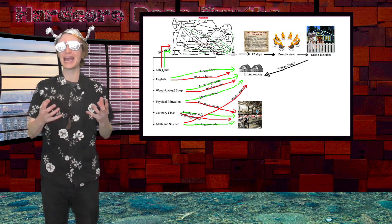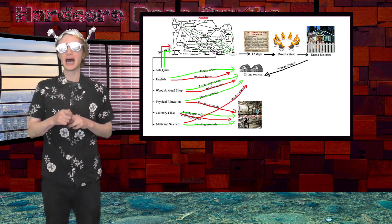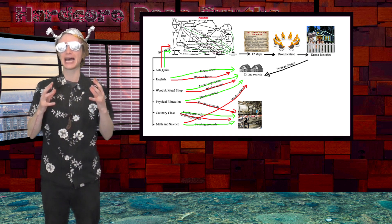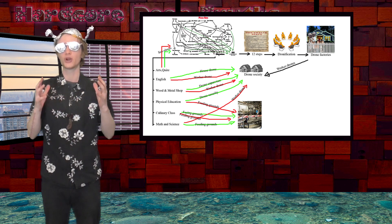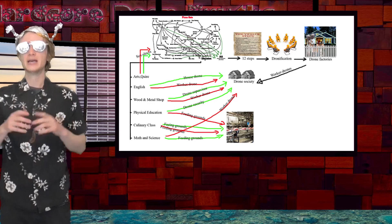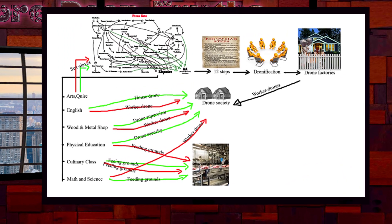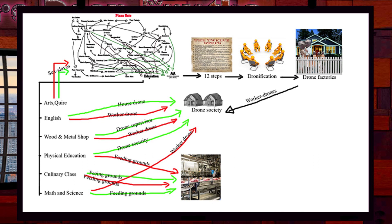We learn English because it's an alien language. The alien wants to be able to communicate once they invade. Those at the top of English class will become house drones. The rest become worker drones. Culinary class is to fatten up the student with a love of food. A lot of students taking culinary class will sadly be sent to the alien feeding grounds after they are done anal probing them.